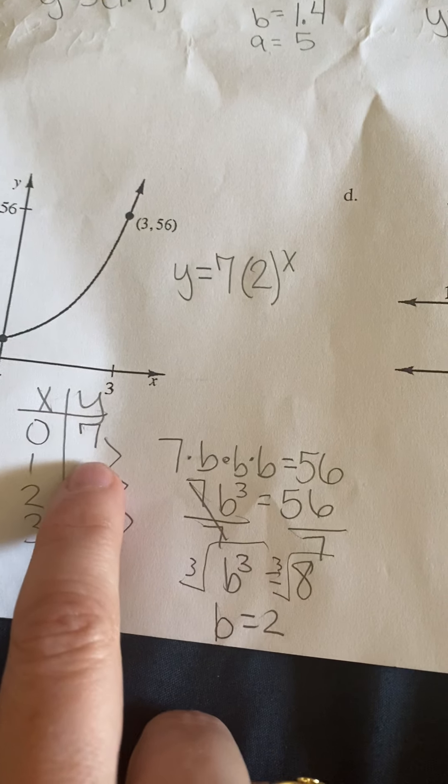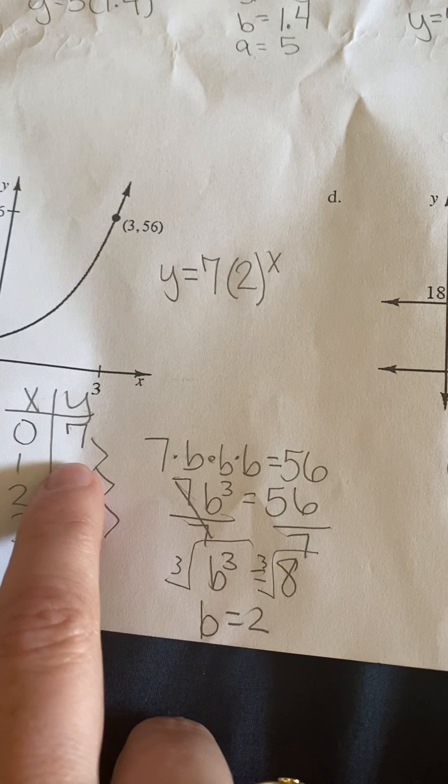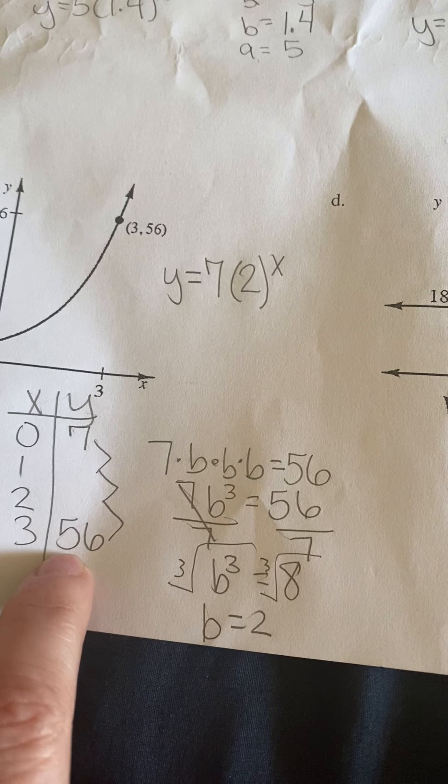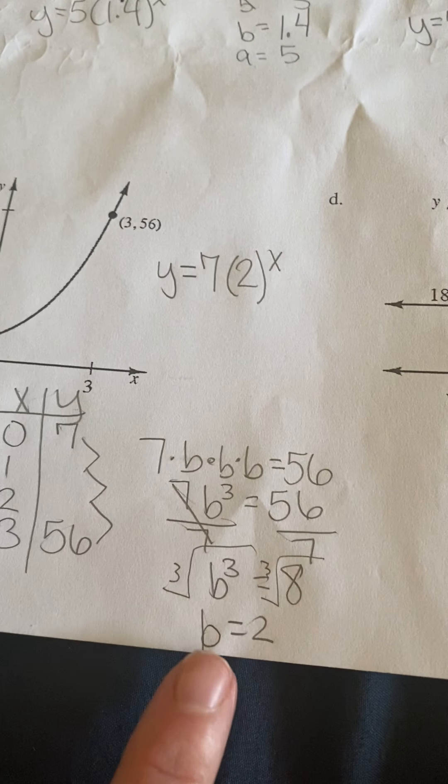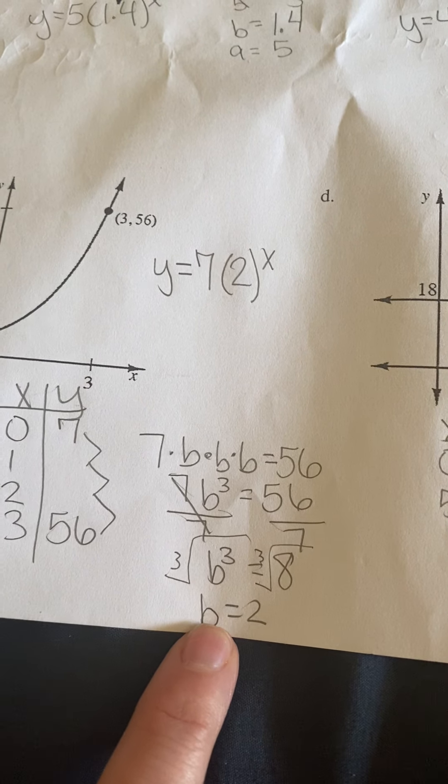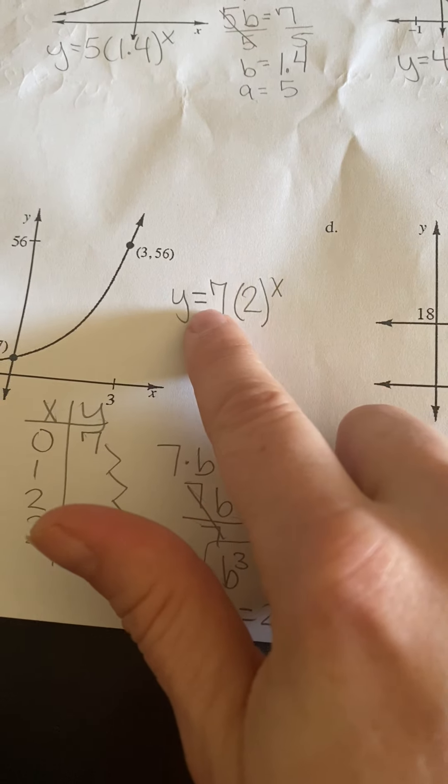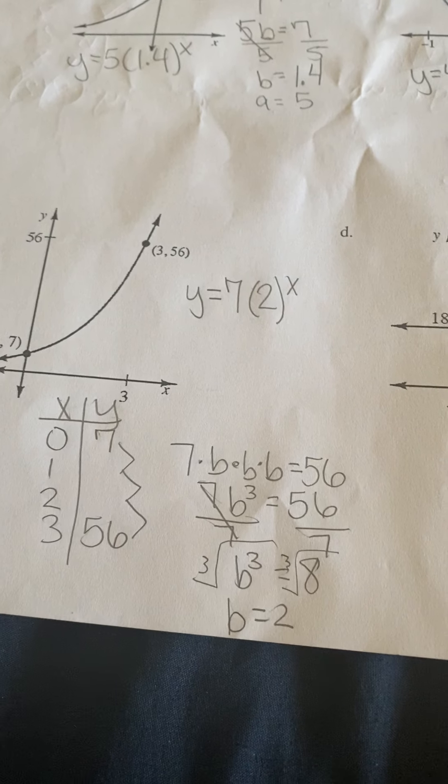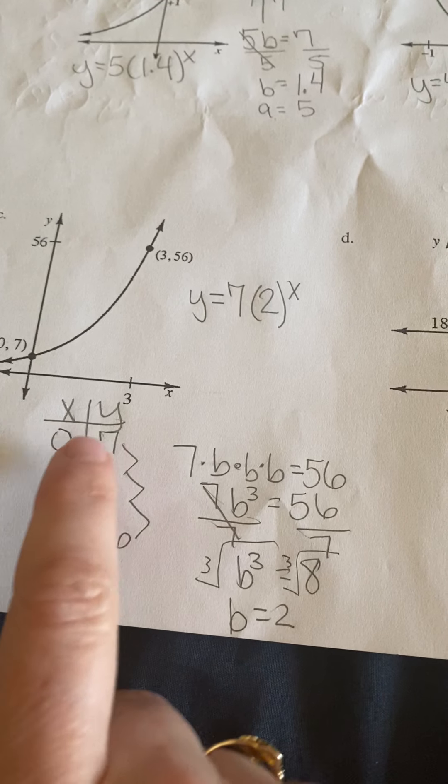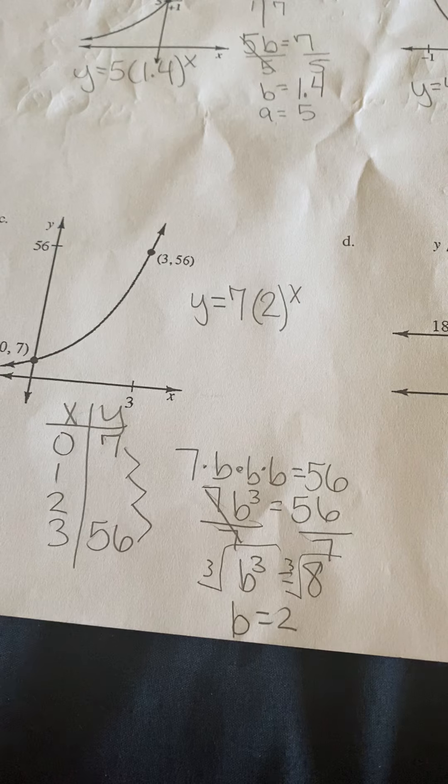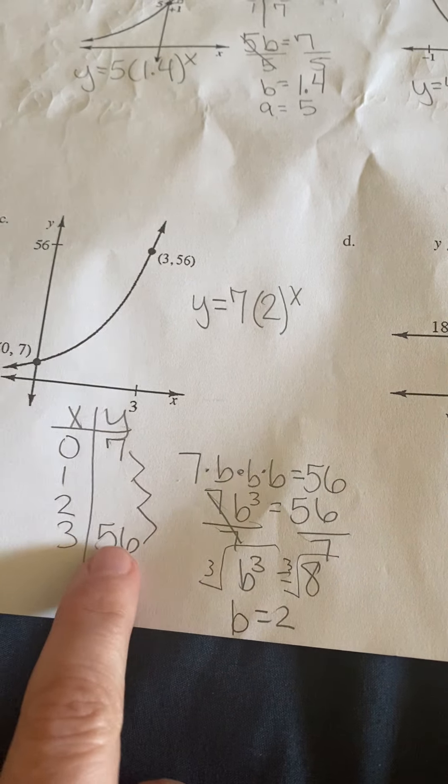So you can double check. When you multiply by 2, 7 times 2 is 14, times 2 is 28, times 2 would be 56. So your multiplier is going to be 2 and your original number is 7. So y equals 7 times 2 to the x power. That one was a little trickier, but hopefully you see that it's because you take b times b times b to get there.